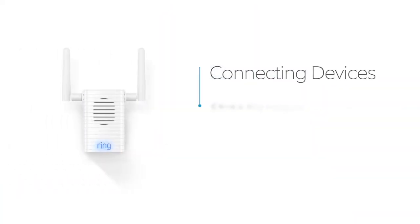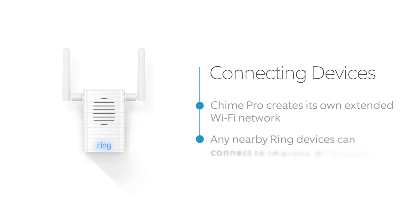Once it's connected to your Wi-Fi network, Chime Pro creates its own extended network that nearby Ring devices can use. Here's how to connect Ring products to your Chime Pro network.